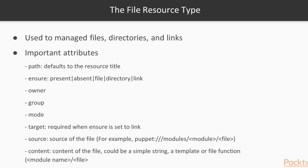We are going to talk about Puppet modules in one of the next videos. And then there is the content attribute, which specifies the content of the file. This could be a simple string, as we are going to see in a few minutes, a template (which we will cover in a later video), or the file function, which accesses the content of a file in a module.